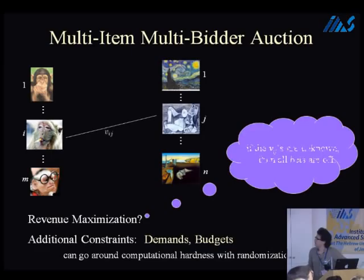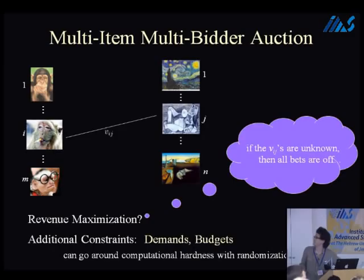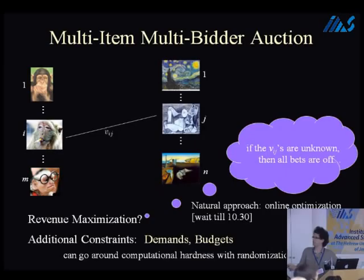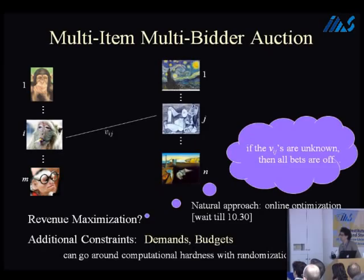What if I don't know the v_ij's? Well, then all bets are off and we are in the realm of online optimization. If you wait until 10:30, Jason is going to be talking about that — what are the right benchmarks? It seems I cannot do well against the surplus, but Jason is going to talk about the reasonable benchmarks I can shoot for.